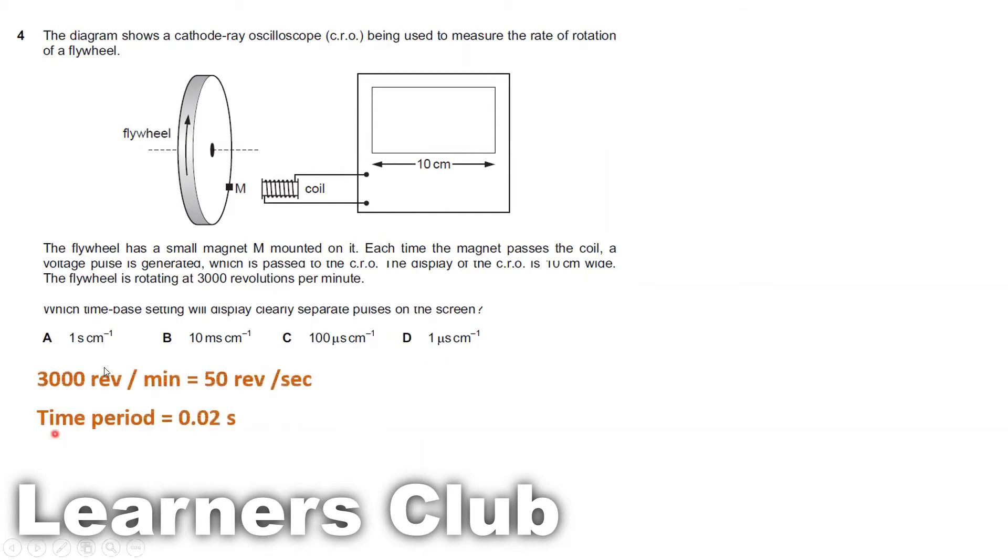If we have 3000 revolution per minute, that means in 60 seconds we have 3000 revolutions. So in one second, divide 3000 by 60, we get 50 revolutions in one second. If I have 50 revolution in one second, that's my frequency. Number of oscillation per second is my frequency. My time period is reciprocal of frequency. So 1 over 50 will get 0.02 seconds. This means one pulse will take 0.02 seconds.